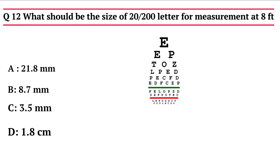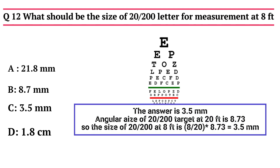Question 12: What should be the size of a 20/200 letter for accurate measurement of visual acuity at 8 feet? Options: A - 21.8 mm, B - 8.7 mm, C - 3.5 mm, D - 1.8 cm. The answer is 3.5 mm. The angular size of a 20/200 letter at 20 feet is 8.73 mm. To calculate at 8 feet, divide 8 by 20 and multiply by 8.73, which gives 3.5 mm.